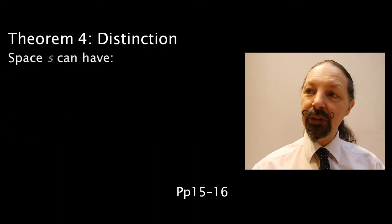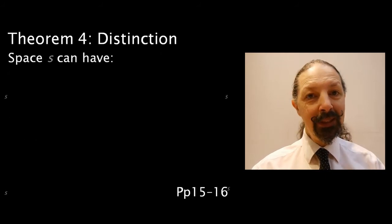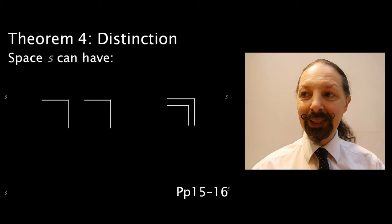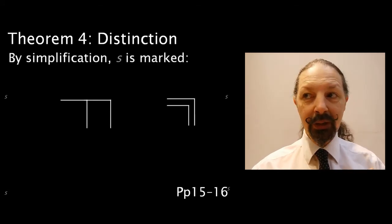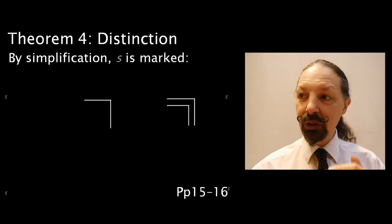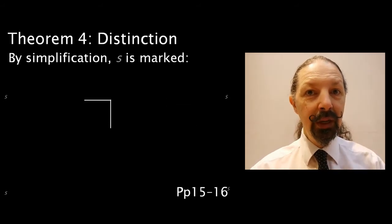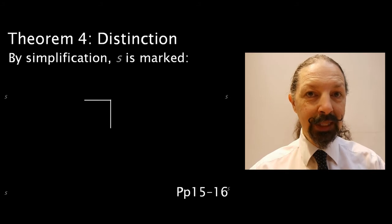Let's see how this looks visually. Space S can have an expression like this in it. Well, in this case, the two adjacent marks can condense, the two nested marks can cancel, so it reduces to a marked state.